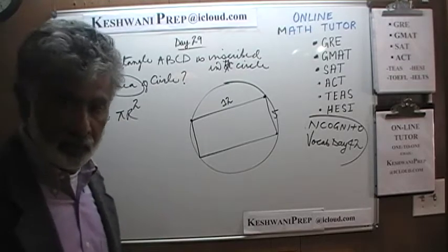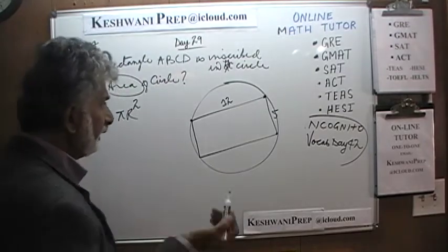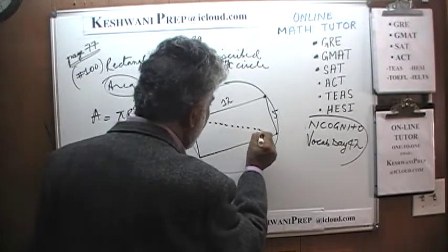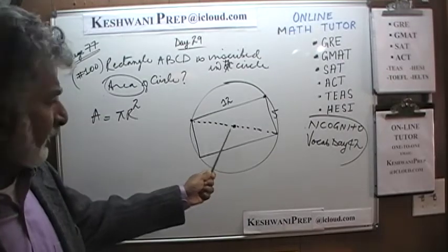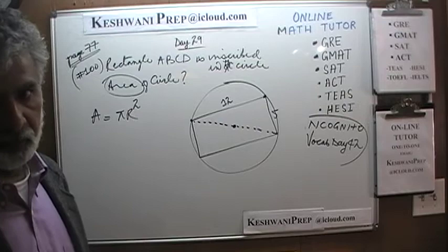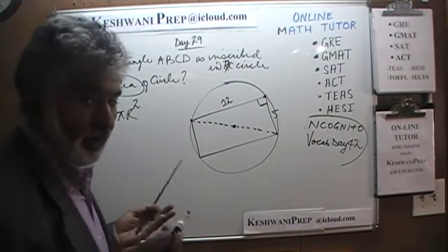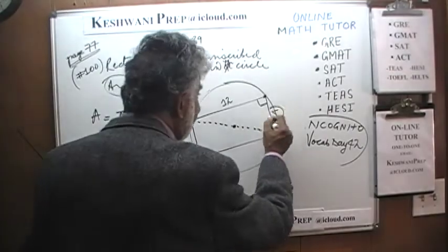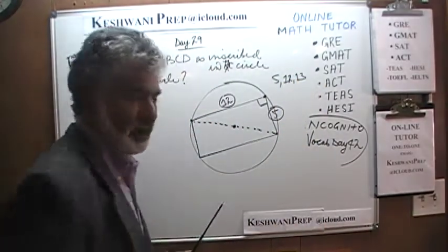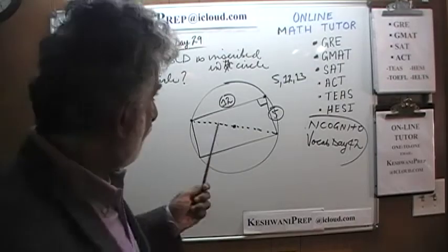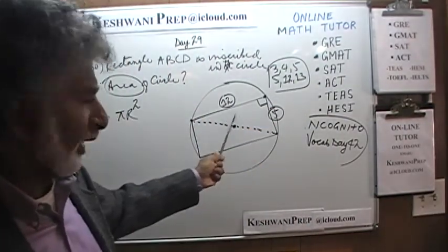We should know that when a rectangle is inscribed in a circle, if you draw a diagonal, that diagonal goes through the center of the circle. In other words, this diagonal is the diameter of the circle. This is a simple right-angle triangle, and I hope you recognize right away that it is a 5-12-13 triangle. There are two kinds of triangles that appear on the exam all the time: one is a 3-4-5 triangle, and the other is 5-12-13. This is obviously 5-12-13.